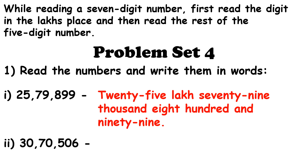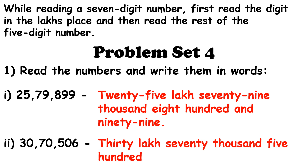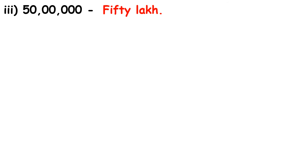Our second question is 30,70,506, which will be read as 30,70,506. Our third question is 50,00,000, which will be read as 50,00,000 — since there are no other digits. The next one is 80,01,000, which will be read as 80,01,000.